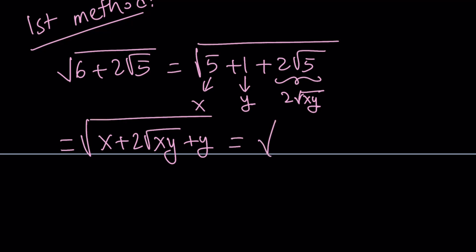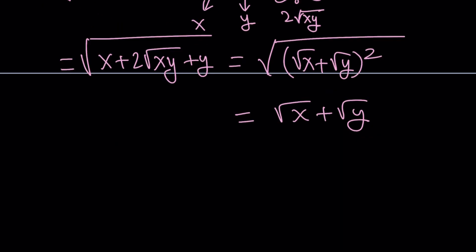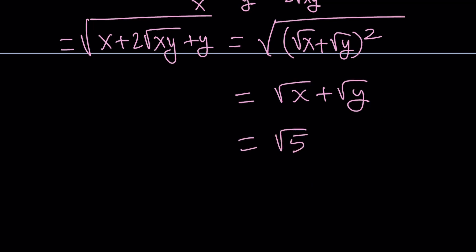And this is under the radical square root of x plus square root of y squared. And notice that a square root of x plus square root of y is positive for real values of x. So this is directly equal to square root of x plus square root of y. But that just means square root of 5 plus 1.